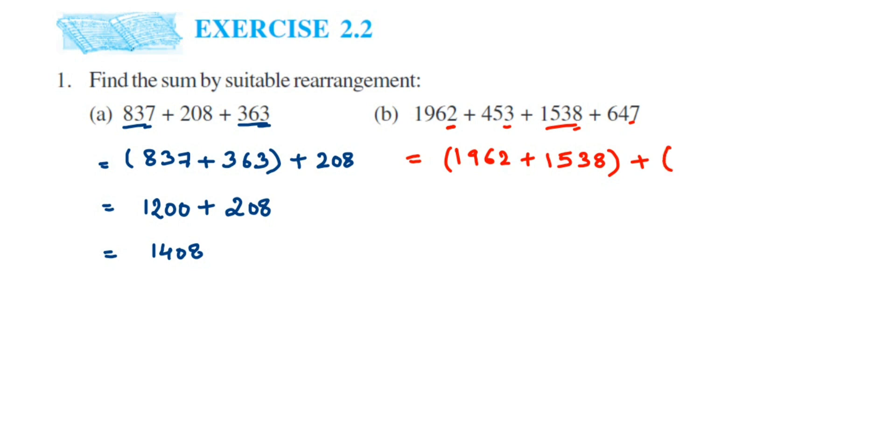Now let's add 1962 and 1538. So 8 plus 2 is 10. Now we got 6 plus 3 which is 9, 9 plus 1 is 10 again. Then we have 9 plus 1 which is 10, 10 plus 5 is 15. So 1 plus 1 plus 1 is 3, so we got here 3500, right?